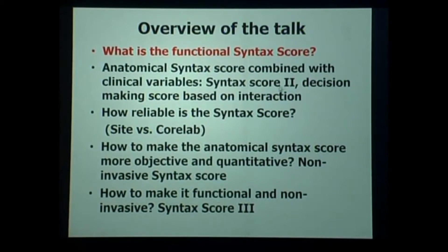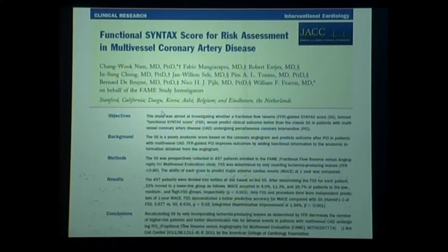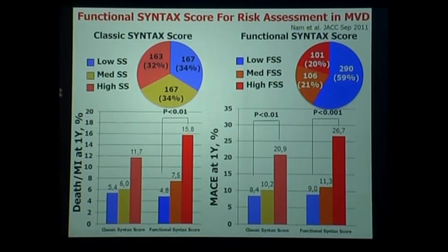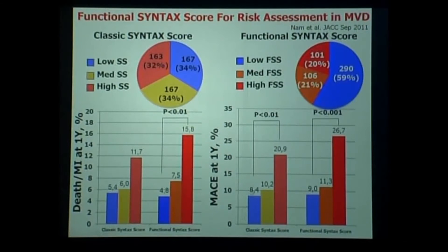What is the functional Syntax score? This is the paper of Bill Ferron, looking again at the FAME trial. He recalculated the Syntax score by incorporating ischemia-producing lesions as determined by FFR, which decreases the number of high-risk patients and better discriminates risk for adverse events in patients with multivessel disease undergoing PCI. On the left-hand side is the classic Syntax score — by definition you have three terciles for low, median, and high risk. And you see in death/MI there is some discrimination, but not significant.